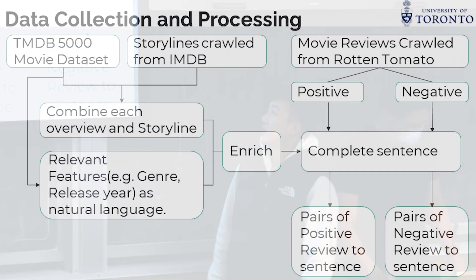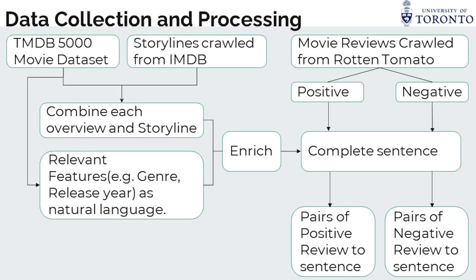We started with a database called TMDB5000, which contains around 5,000 samples with features like titles, overviews, and genres. And because of the poor representativeness of the overview, we combined it with the storyline we collected from IMDB. Storylines are like an expanded version of an overview and contain more story details.